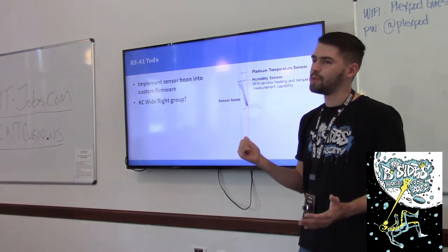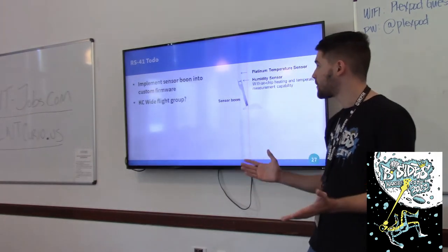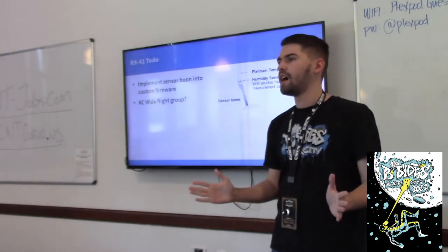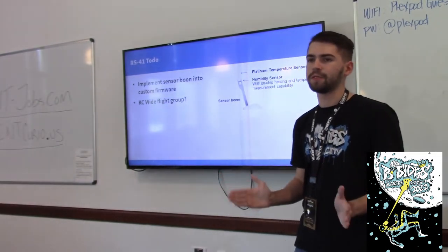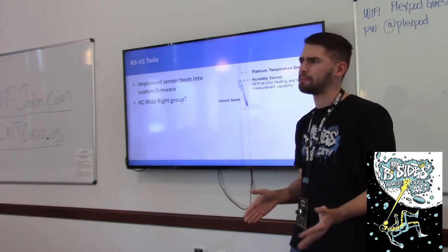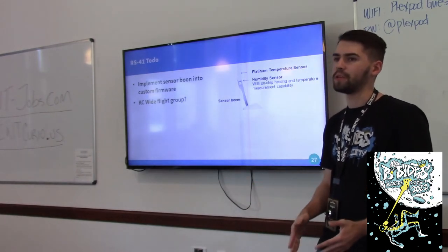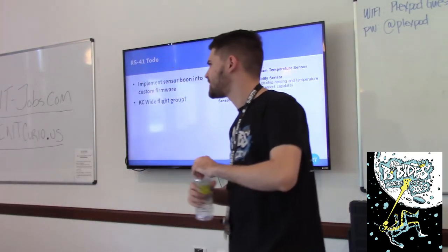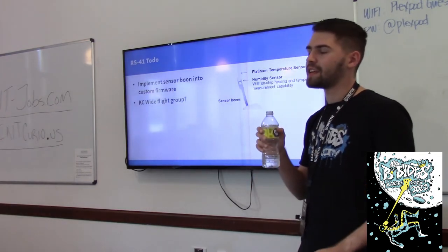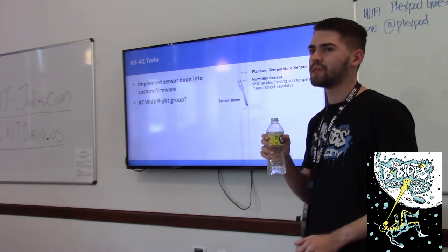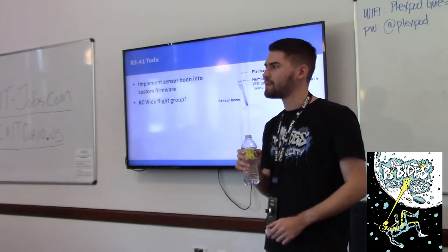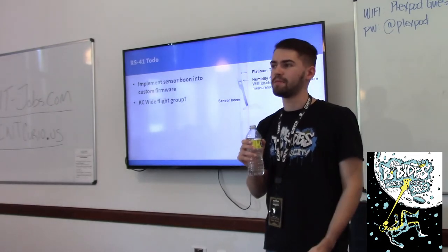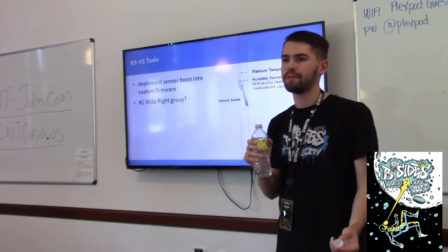Right now the sensor boom that contains the proprietary sensors is not supported. As you can see it has a temperature and humidity sensor on the end, and some efforts were made to reverse engineer it, but we haven't figured out the offsets or the command to pull temperature from it. One thing I'd like to see — kind of a warp dream — is something in Kansas City where people are launching balloons. Interestingly, somebody actually launched a balloon just down the street while we were here, though I'm not sure who it was affiliated with.